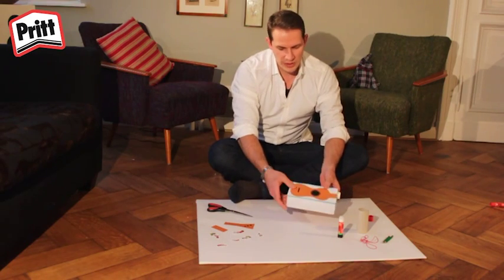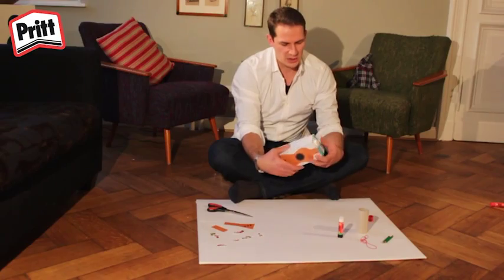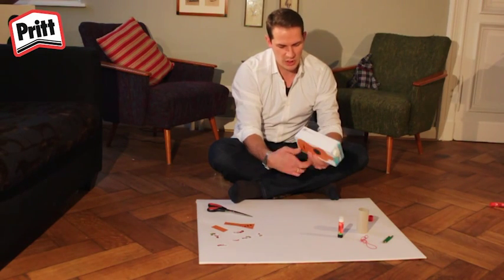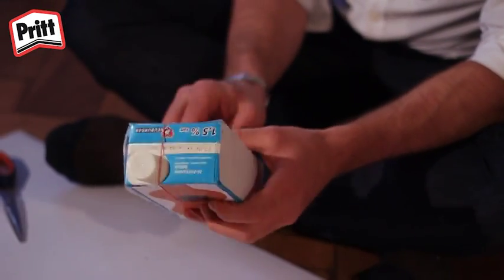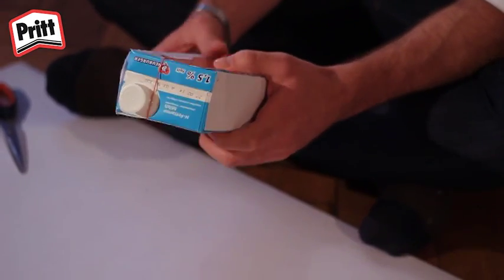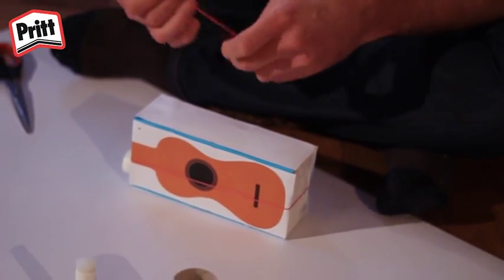Nu je al extra papier hebt afgeknipt, kunnen we de elastiekjes op de doos plakken. Wind ze op deze wijze rondom de doos. Ik gebruik drie elastiekjes op mijn ukelele, omdat ik dat een goed aantal vind.